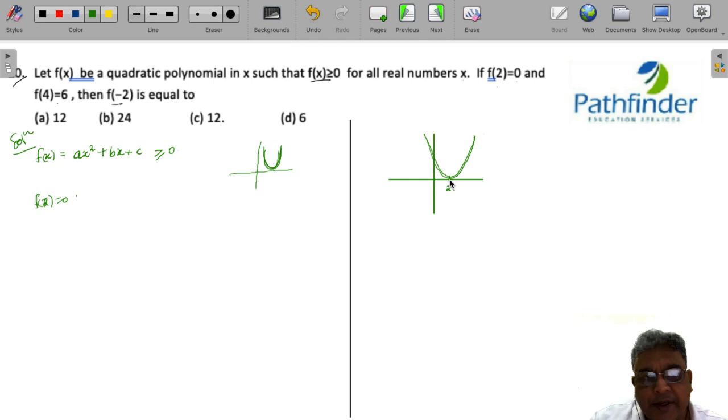And if you note here, points that are equidistant from 2 on either side will have the same value of the function.